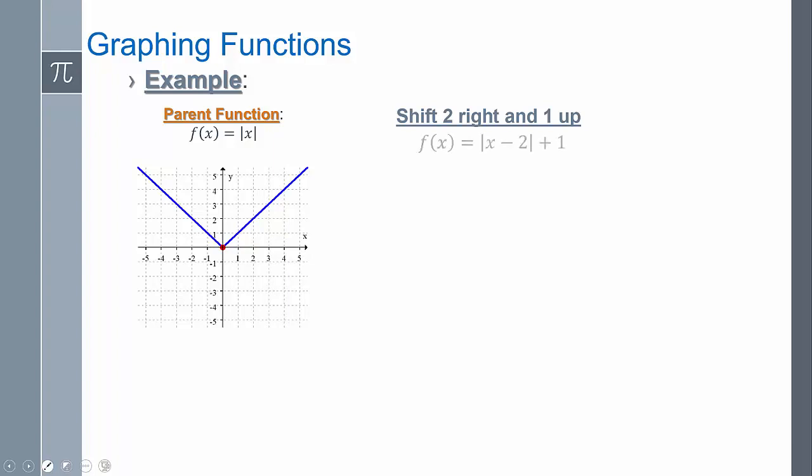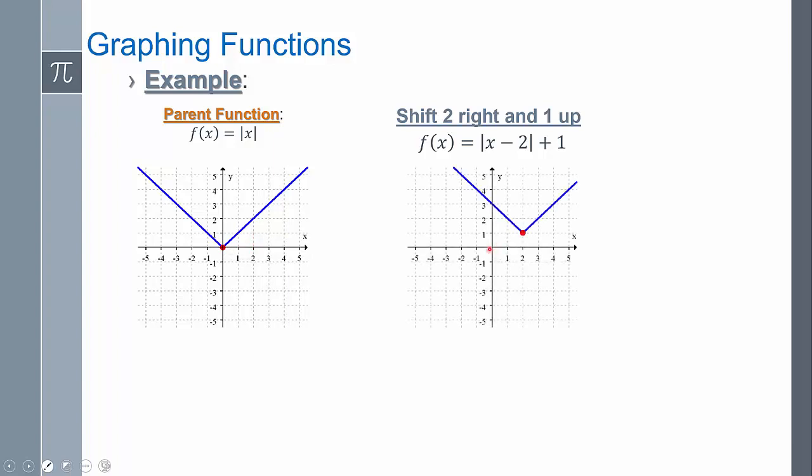So here's my absolute value function. If I had two to the right and one up, so two to the right and one up. So it starts at zero zero, two to the right and one up.